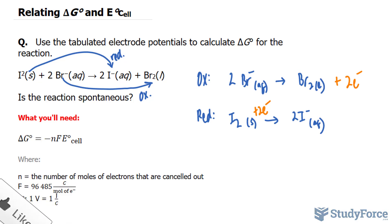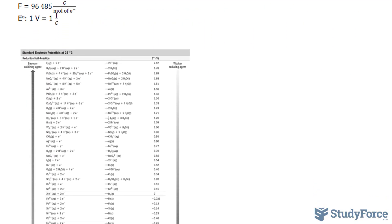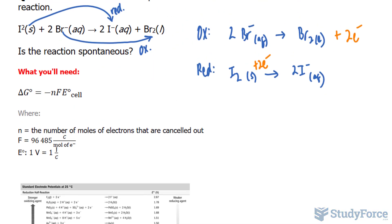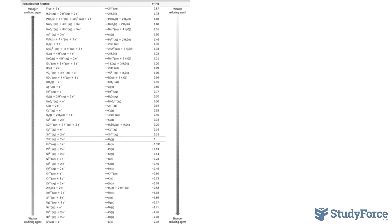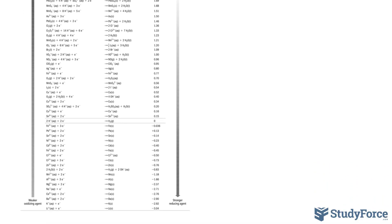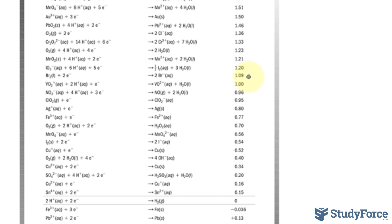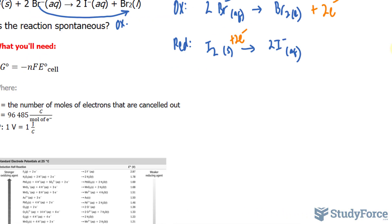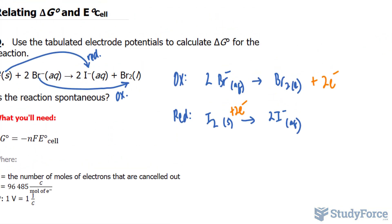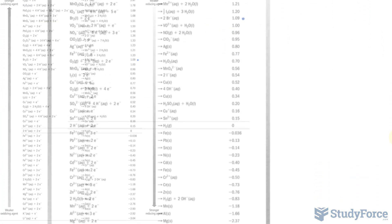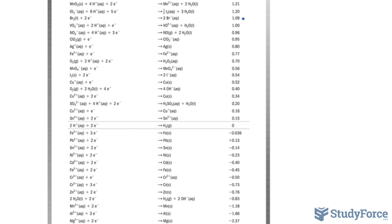Once we've written down our half reactions, we can find out the standard electrode potential for each of these reactions using this table. So the first one is 2Br minus. Every textbook should have a table that looks like this, and it's found right there. It's positive 1.09. For the reaction underneath, we have iodine, and that's found right here as 0.54.